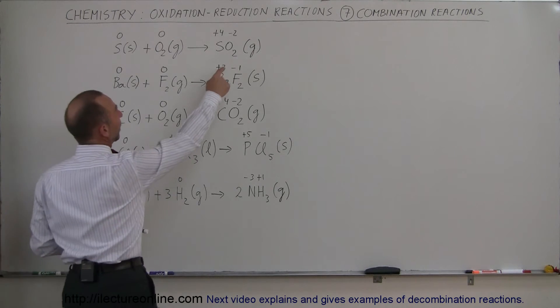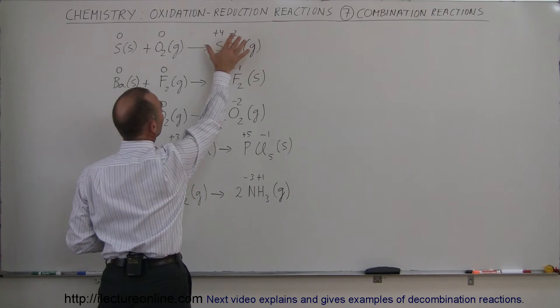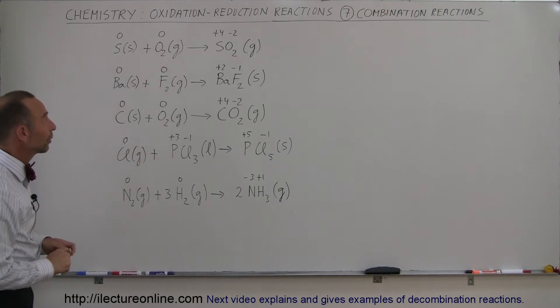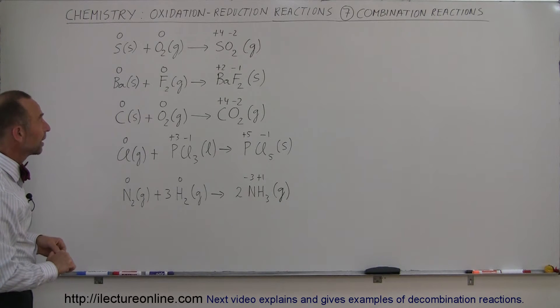Notice that since there's two oxygens, 2 times minus 2 is minus 4. So that adds up to zero. So the oxidation number on both sides of the equation, so to speak, are balanced.